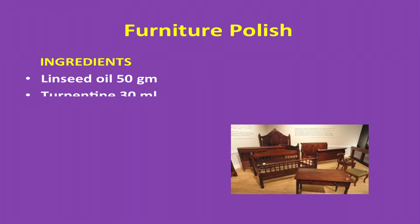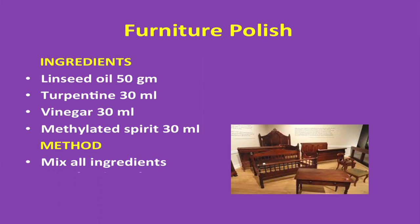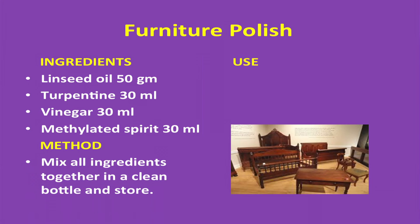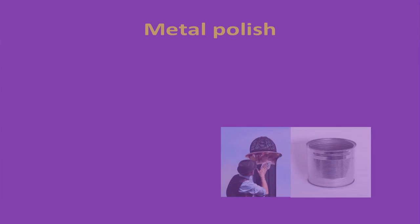Furniture polish — ingredients: linseed oil 50 grams, turpentine 30 ml, vinegar 30 ml, methylated spirit 30 ml. Method: mix all ingredients together in a clean bottle and store. Use: this can be applied on furniture with a pad of old cloth.